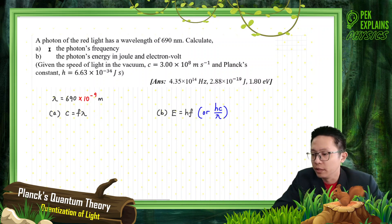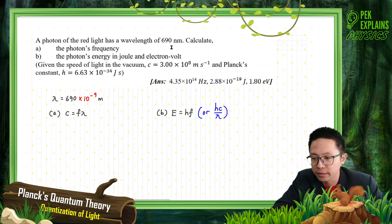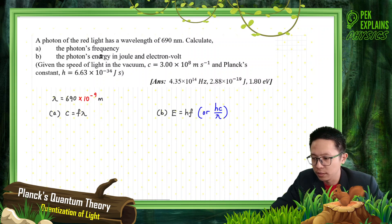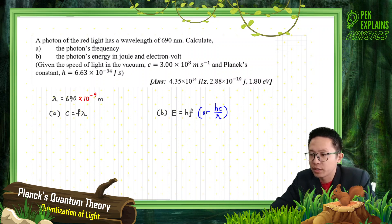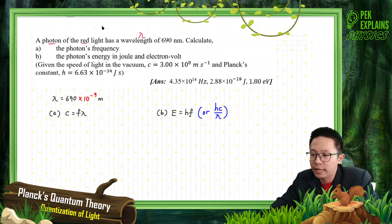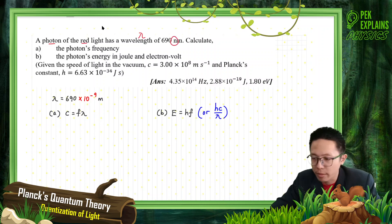Let's look at the first question. A photon of red light has a wavelength of 690 nanometers. Calculate the photon frequency and the photon's energy in joule and electron volt. The question provides us the wavelength. We have the wavelength in nanometers — remember to change nanometers to meters, to SI units.